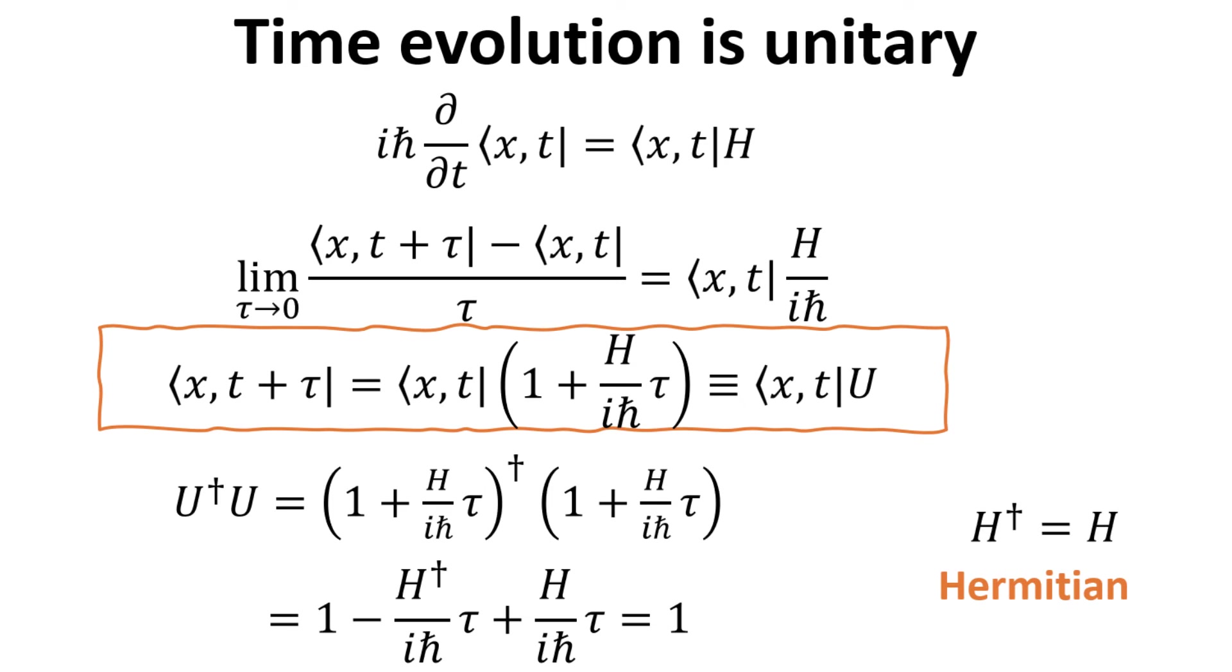We notice that much of the derivation here is analogous to our discussion of the translator operator in a previous video. This is not surprising since time and energy are conjugate operators, just like position and momentum. The momentum is a generator of translation in position, while here the Hamiltonian is a generator of translation in time.